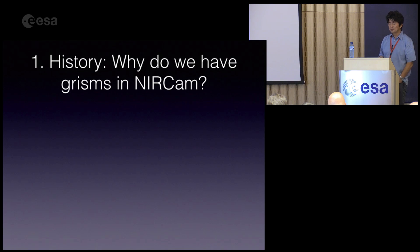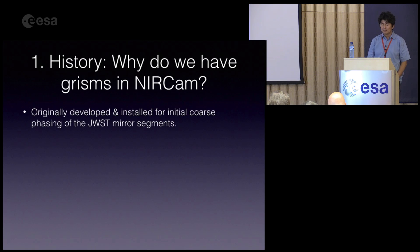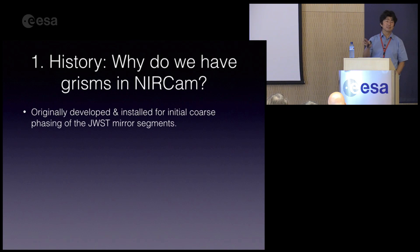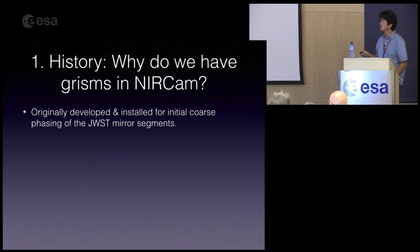The first question is: why do we have GRISMs in NIRCAM? This is before my time, so this is information I received from other people on the team. Originally, many people outside the NIRCAM team and the JWST community may not know, so I'll describe why we have GRISMs.